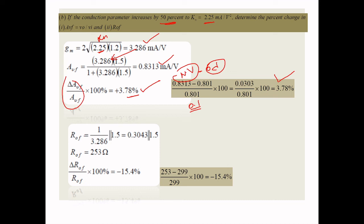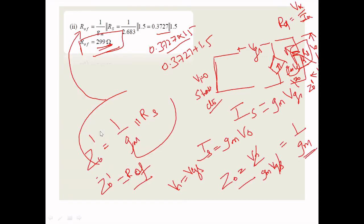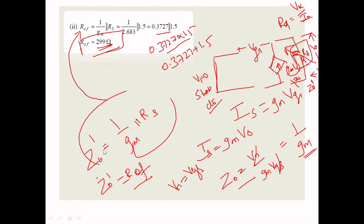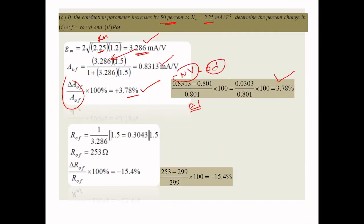For the new R0F with GM = 3.286: R0F = (1/3.286) || 1.5 = 253 Ω. The old value was 299 Ω and now it is 253 Ω, so it is decreasing. Percentage change = (253 − 299) / 299 × 100 = −15.4%. So the output impedance decreases by 15.4%.